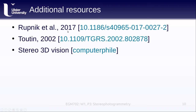Some additional resources are included: a paper from Rupnik et al. 2017 describing the MicMac photogrammetry software used in the practical, a paper from Terry Tuthhill 2002 on extracting DEMs from ASTER imagery, and a video explaining stereo 3D vision available via the link. That's all for this lesson — if you have any questions, please post them in the discussion board on Blackboard.